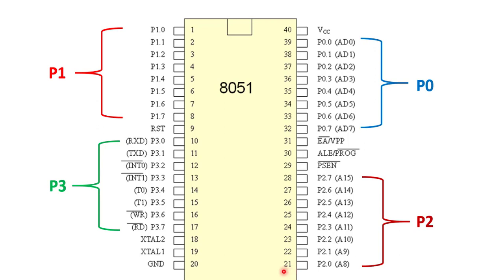On the right-hand side, pins 21 to 28 are allotted for port 2. Port 2 also performs a dual function: first, it works as a general-purpose input/output port; second, its pins are multiplexed with the higher-order address lines A8 to A15. The 8051 has an 8-bit data bus and a 16-bit address bus, so the upper 8 address bits (A8–A15) are multiplexed with port 2 to carry memory addresses, including addresses of external memory.